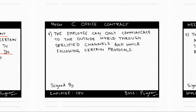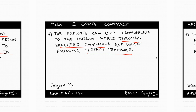The fourth term reads that the employee can only communicate to the outside world through specified channels and while following certain protocols. So there are few channels of communication in the MUC office and the employee can only communicate through these channels, following certain standards. For example, when starting a communication, it may begin with 'Hello, welcome to MUC office,' then say what it wants to say, and finish with something like 'Thank you for talking with us.' This is the protocol the MUC office employee should follow.